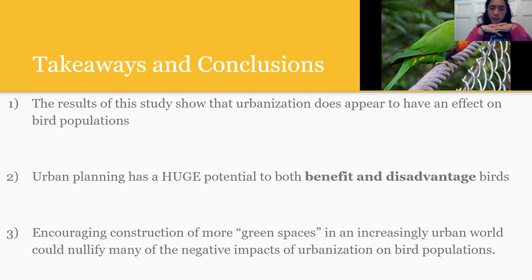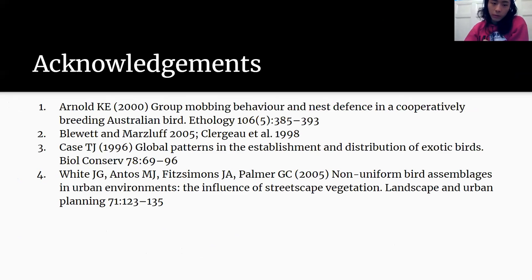Takeaways and conclusions I drew from the paper: urbanization can have some consequences on birds. Second, urban planning can have huge potential to affect birds both negatively and positively. Third, if we constructed more green spaces like parks or included more gardens in developed urban centers, it could have a chance to nullify a lot of these harmful impacts of urbanization on bird populations. Currently birds are experiencing a lot of trouble in migration, finding shelter, and reproduction. Having more green spaces could help ease the negative impacts of an increasing human population on them.